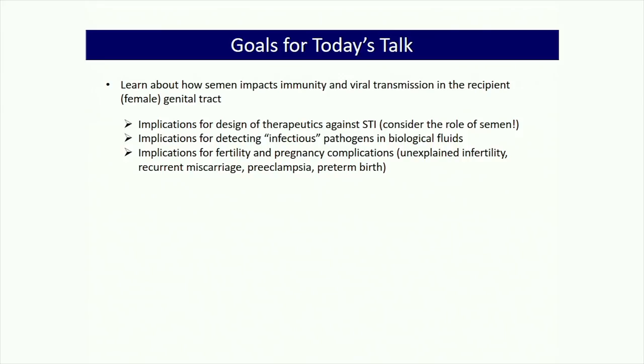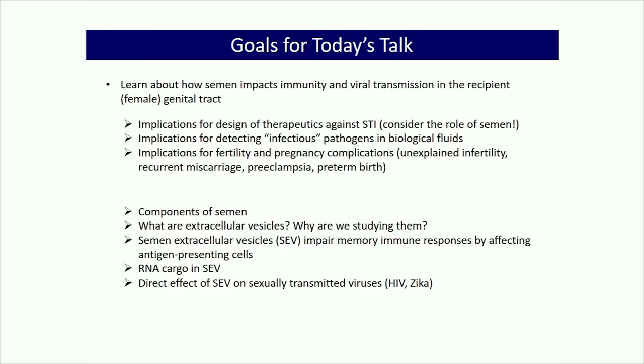If you can pick up something by an RNA assay in semen, that doesn't necessarily mean it's going to be infectious, partly because semen has a really strong effect on the infectious potential of viruses. This also has important implications for fertility and pregnancy complications, including unexplained infertility, recurrent miscarriages, preeclampsia, and preterm birth. Today I'll cover the components in semen, focusing on the extracellular vesicle fraction and why I'm particularly interested in studying immunoregulatory factors in semen.